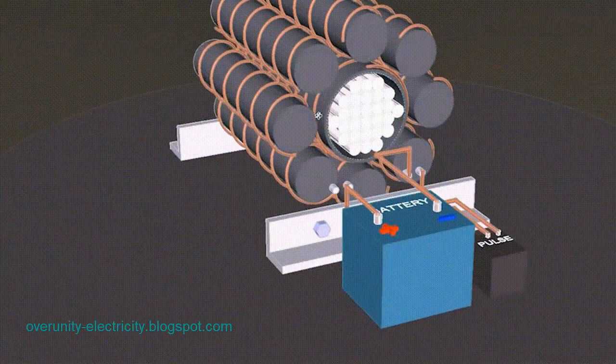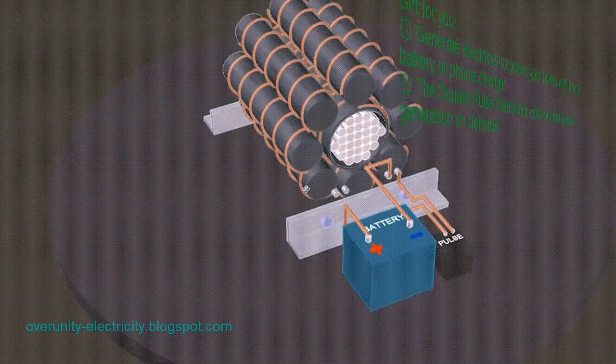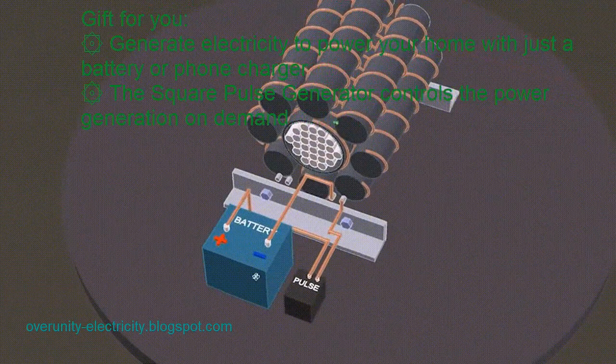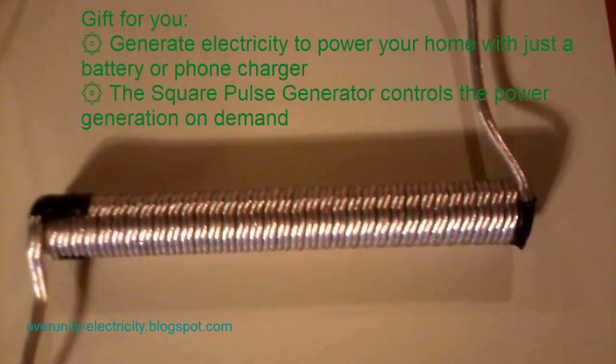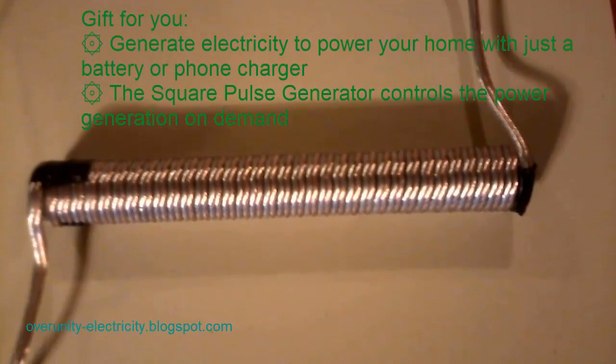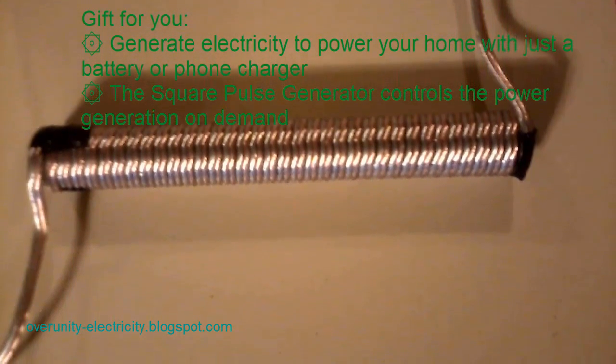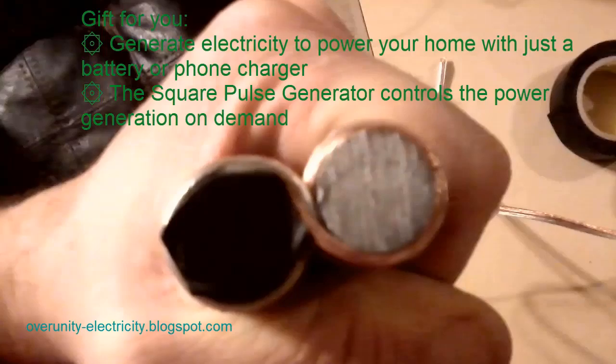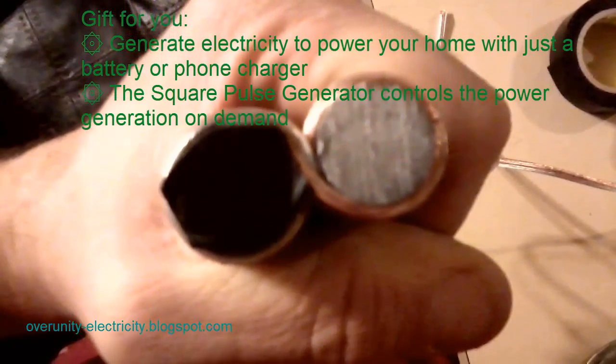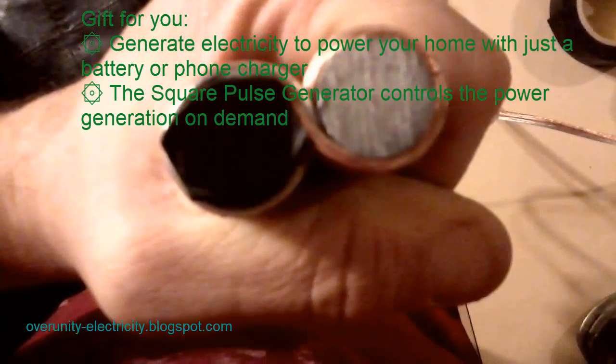Thomas Henry Moray invented a radiant energy device. Edwin Gray had the 50 horsepower EMA motor and Paul Bowman designed Tesla machine with two parallel magnetic discs. Dr. Robert Adams from New Zealand's invention includes heaters, generators and electric motors powered by permanent magnets. There is also the motionless electromagnetic generator, Meg by Tom and the electromagnetic generator by John.